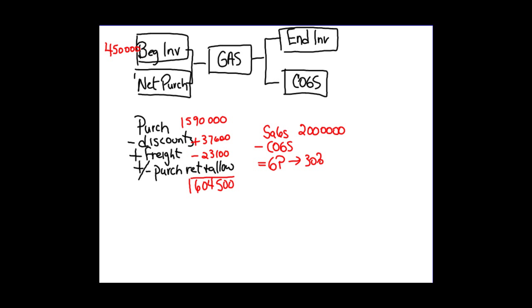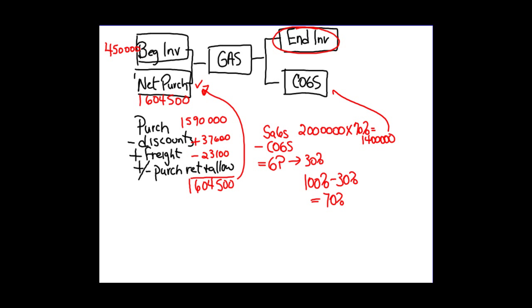That's the information given to estimate ending inventory. To get ending inventory, we need net purchases — which we calculated as $1,604,500 — and cost of goods sold. To get cost of goods sold, we take the gross profit percentage and convert it: 100% minus 30% gives a cost of goods sold percentage of 70%. We then multiply 70% by $2,000,000 in sales to get our cost of goods sold.